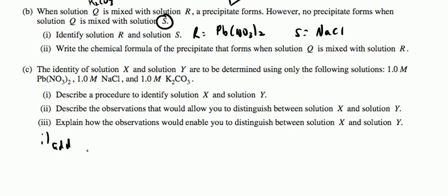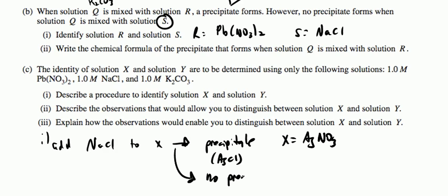Add, so this is one, add NaCl to X. If it makes a precipitate, that precipitate being AgCl, X equals AgNO3. If there is no precipitate, X equals BaCl2. So, you're going to go that way. If you get a precipitate with X, it's AgNO3. If you do not get a precipitate, X is BaCl2. So, if you do, that means Y equals BaCl2. And that means Y here equals AgNO3.